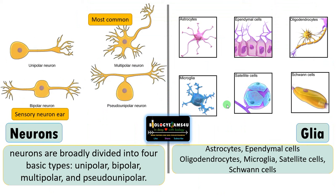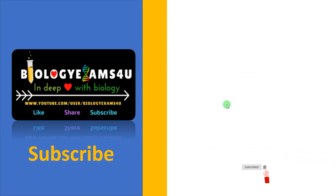So these are the major differences between neurons and glial cells. Hope you are clear. Take care, stay blessed. Thank you so much. You are with biologyexams4u.com.